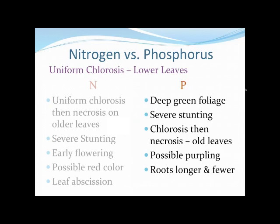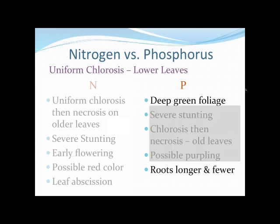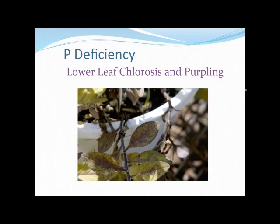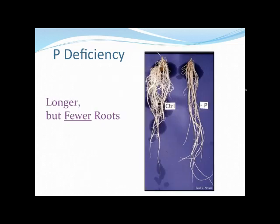Looking at phosphorus: we look for deep green foliage initially and fewer, longer roots. This is the initial stage — you see a little bit of darker green color in the phosphorus-deficient plants. You can also get a purpling color — that's a pretty distinct one — but it's not always the smoking gun, because several other deficiencies also show purpling or red color. However, if you take the plant out of the pot, with true phosphorus deficiency you'll often see fewer roots that are very long and slender, without the root hairs you'd expect.